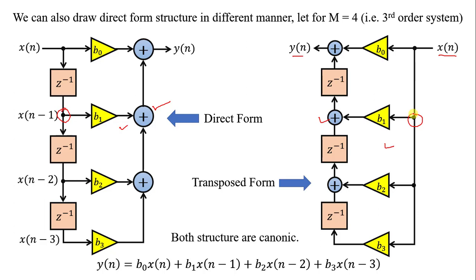Both structures are known as canonic form. Canonic form means the order of the filter is equal to the number of delay elements in the structure.